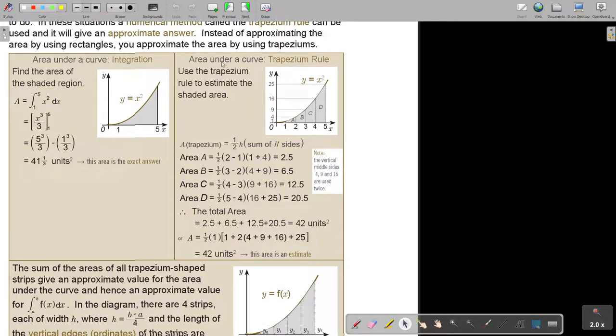Now do the same with the same formula but use the trapezium rule to estimate the shaded area. It's just breaking up all of them into trapeziums. The more trapeziums the more accurate. What is the formula to find the area of a trapezium? It's half height sum of parallel sides.